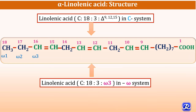The second essential fatty acid is alpha-linolenic acid. In the C system it is denoted as C18:3, delta 9, 12, 15 — 18 carbons with three double bonds at positions 9-10, 12-13, and 15-16. In the omega system the first double bond is between omega 3 and omega 4, which is why it is considered an omega-3 fatty acid.